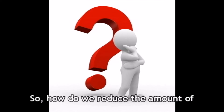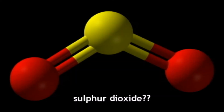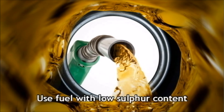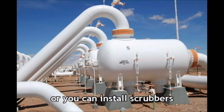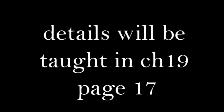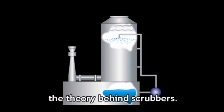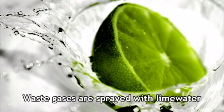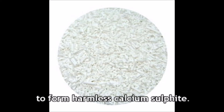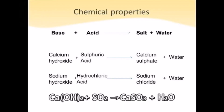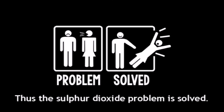How do we reduce the amount of sulfur dioxide? Use fuel with low sulfur content, or install scrubbers to remove sulfur dioxide. Waste gases are sprayed with lime water to form harmless calcium sulfite: Ca(OH)2 + SO2 → CaSO3 + H2O. Thus the sulfur dioxide problem is solved.